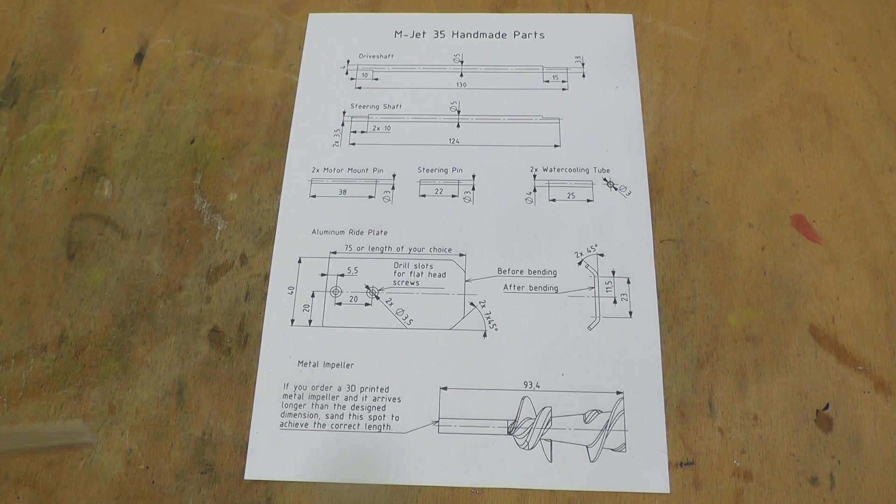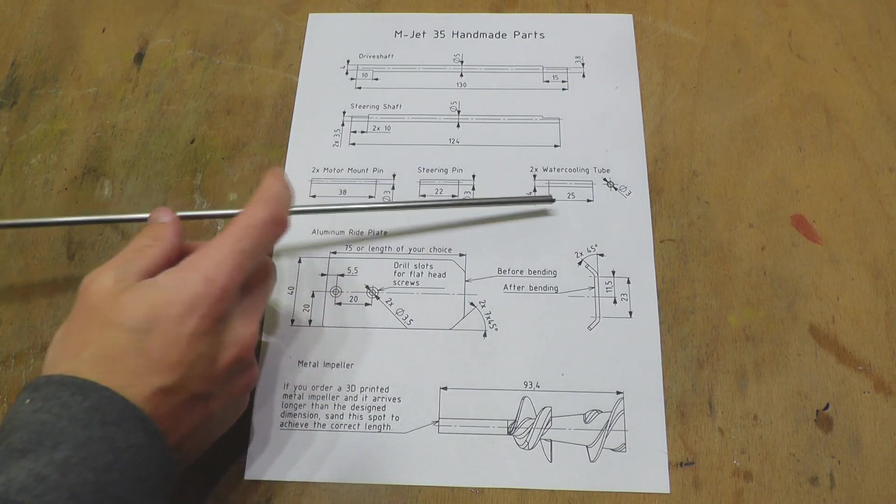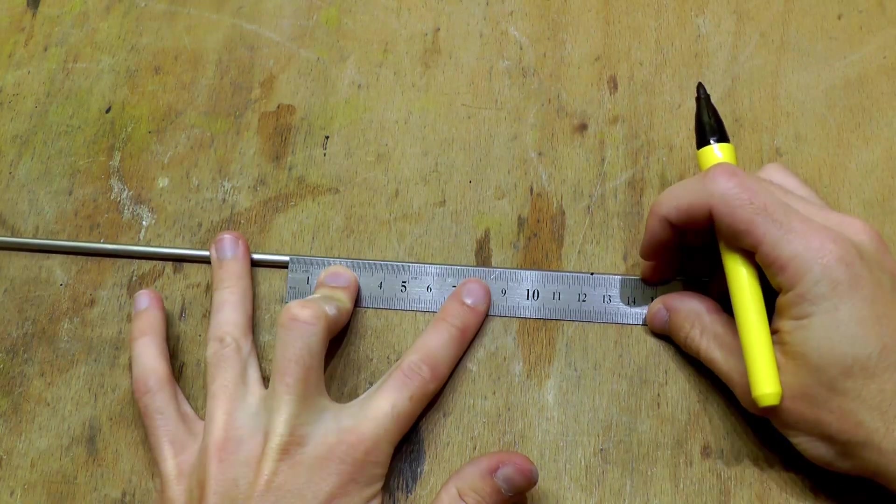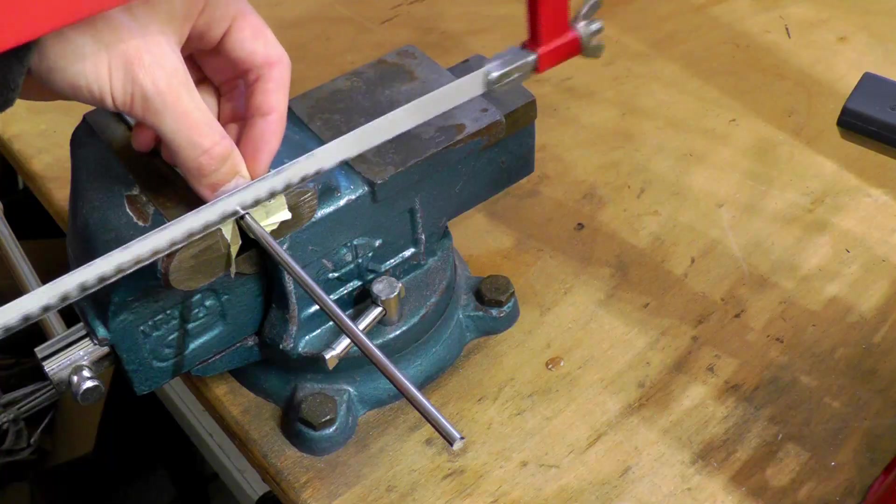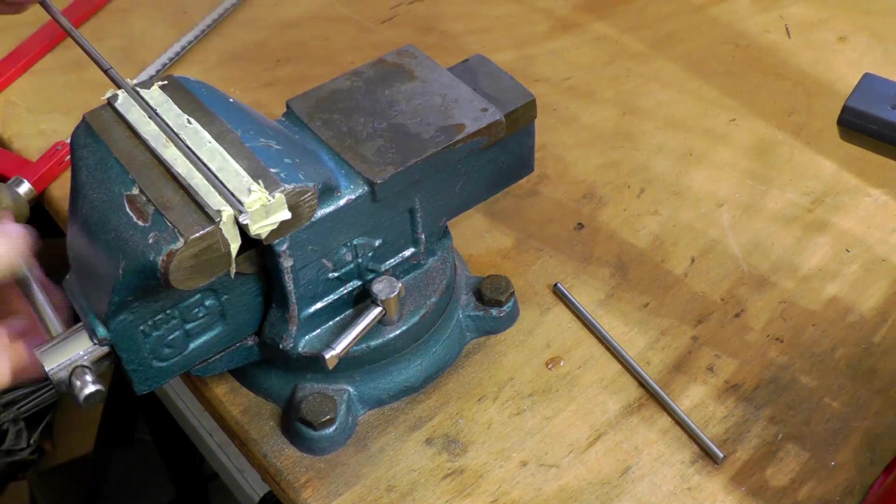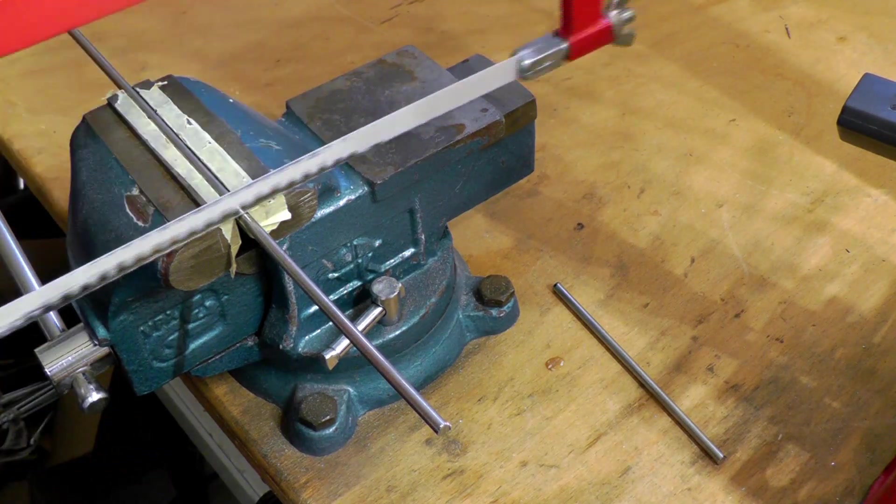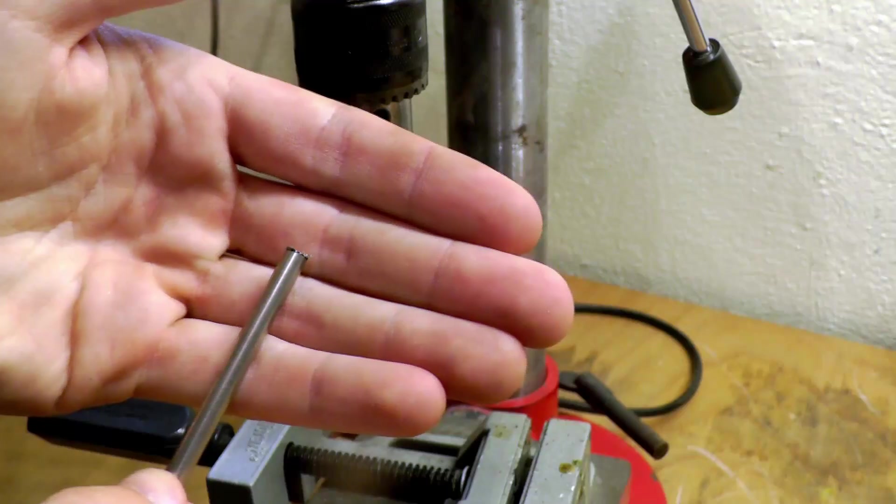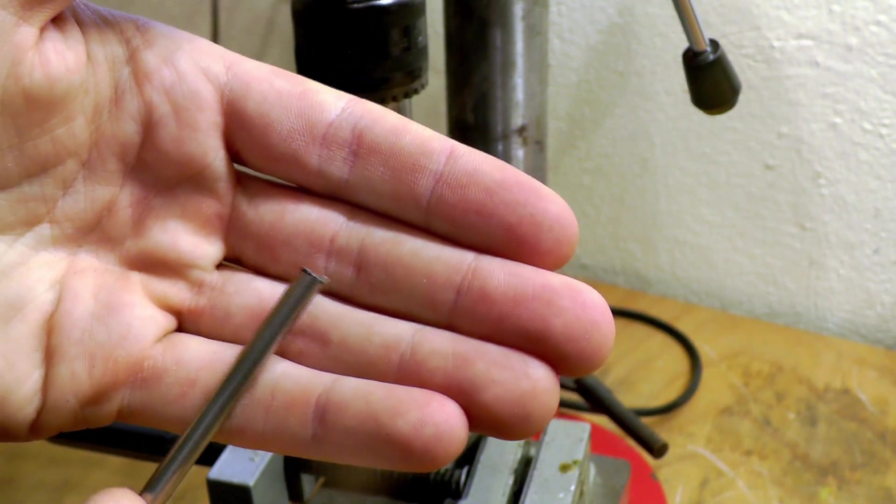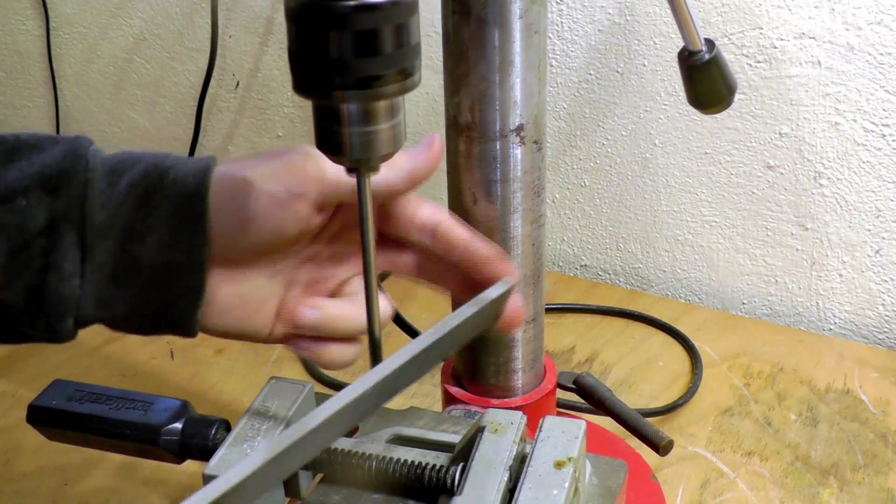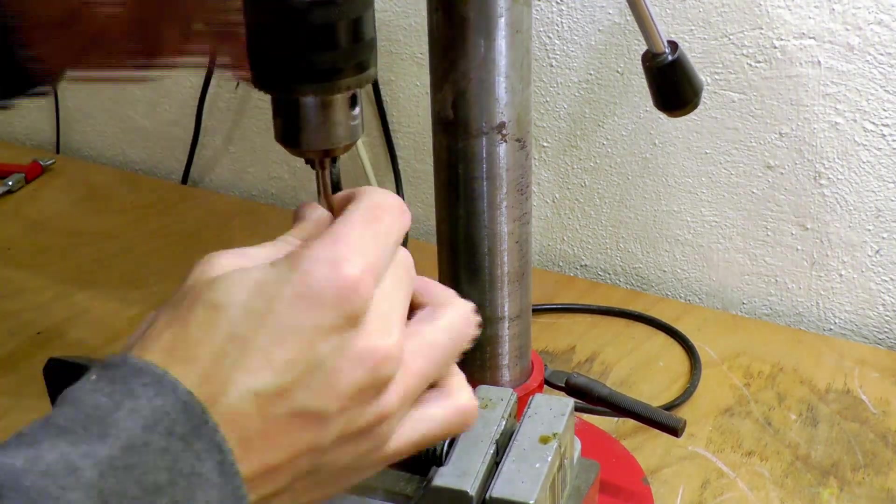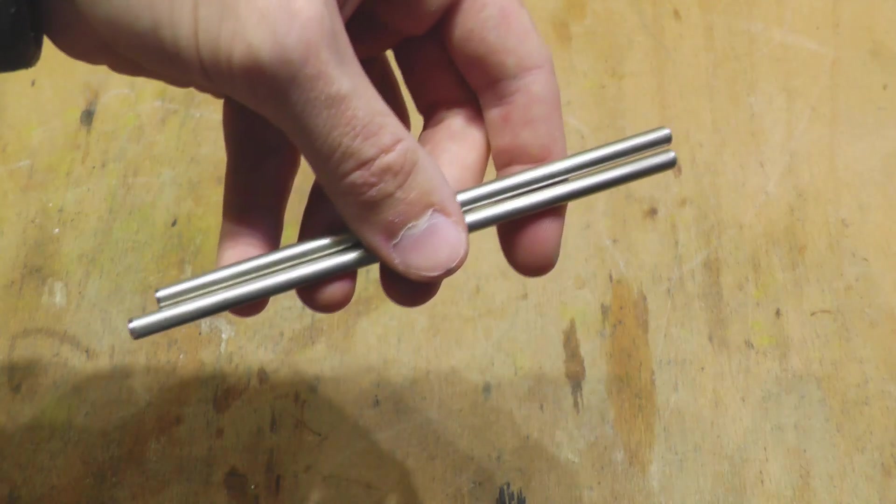These two parts are made from a 5mm stainless steel rod. Now I will use drill press and a file to smooth out the edges which I have just cut. Okay, so we have our shafts ready.